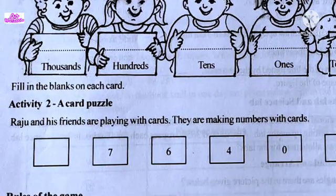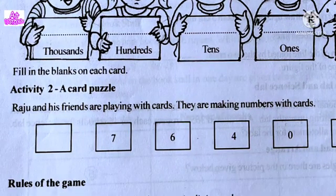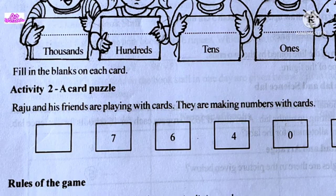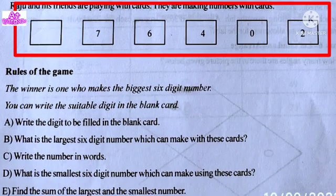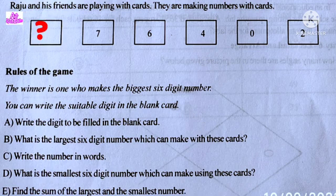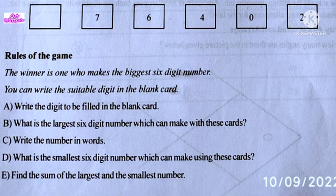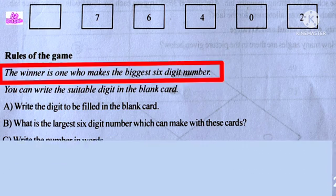Activity 2: A Card Puzzle. Raju and his friends are playing with cards and making numbers with cards. Raju has a few cards. The winner is the one who makes the biggest six-digit number.